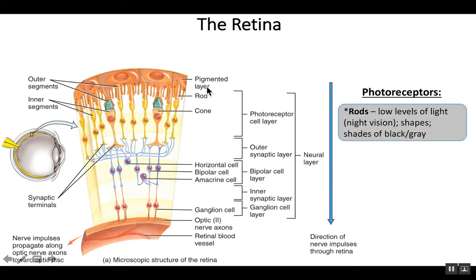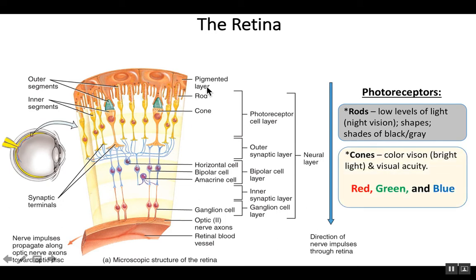As a review, we have rods and cones, which are known as your photoreceptors. The rods are most useful during low levels of light — for example at night time — and they're important for our night vision. They help us distinguish shapes and shades of black and gray. Rods require vitamin A. It's specifically a requirement for your rods to function properly, so individuals with deficiencies in vitamin A might have trouble seeing at night.